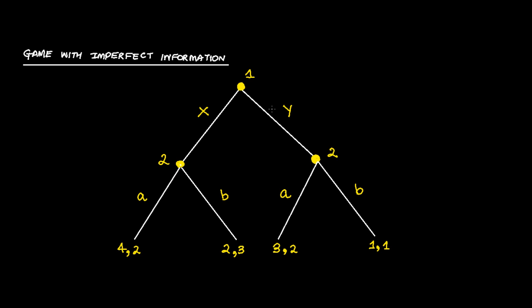But in some cases, it might be possible that this is not always clear. This is the case with the games of imperfect information, and that would mean that when player 2 is sitting at this node or at this node, he doesn't know at which node he is sitting.